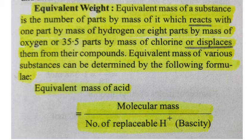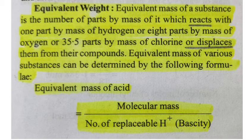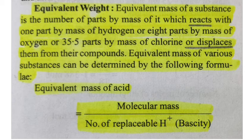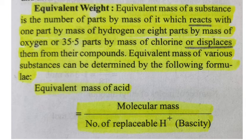or 35.5 parts by mass of chlorine, or displaces them from their compounds. So we have a particular substance that reacts with hydrogen — one part by mass of hydrogen — and that gives us the equivalent weight of our substance. So we have to determine how many grams of hydrogen are involved. That is the equivalent weight.